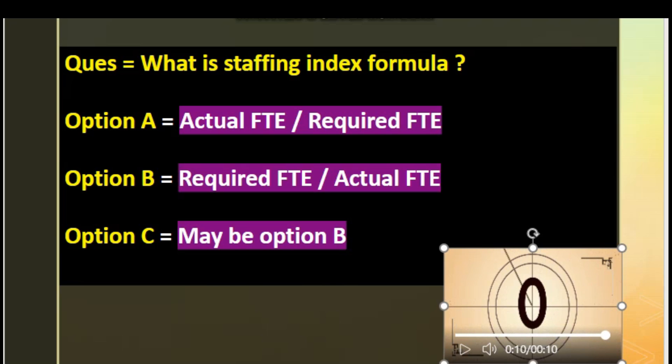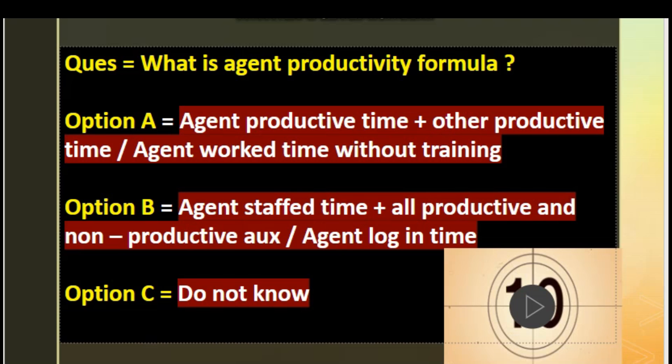The correct answer is Option A: actual FTE divided by required FTE. That is used in finding out the number of FTEs or number of agents required. The fifth question is: what is the agent productivity formula? Option A: agent productive time plus other productive time, divided by agent work time without training.